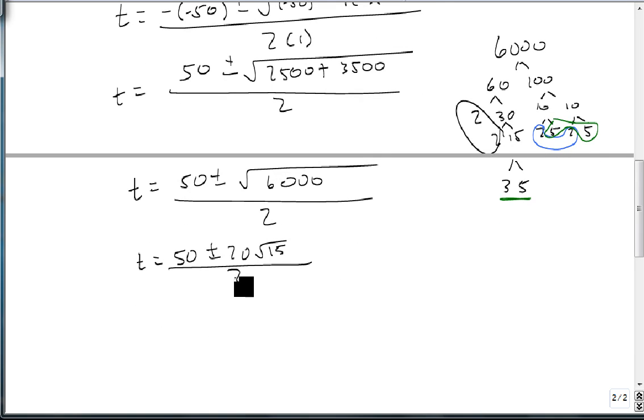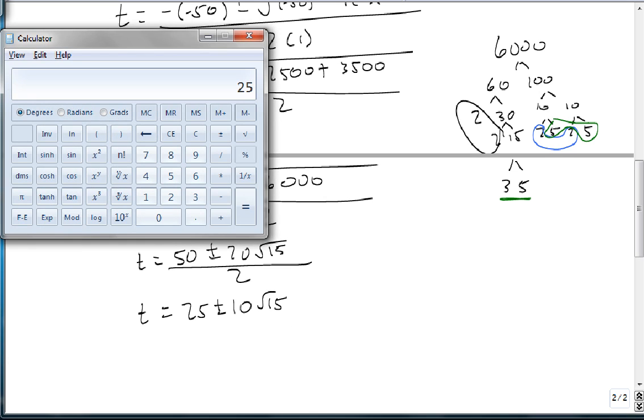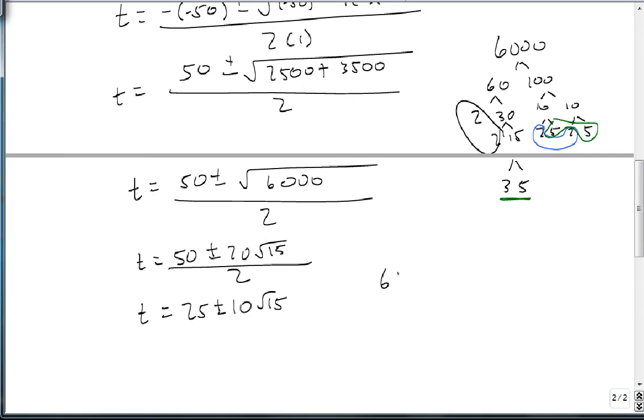Well, at this point we know that 2 divides into 50 and it divides into 20, so t equals 50 divided by 2 is 25, plus or minus 20 divided by 2 is 10, root 15. So in our calculator now, we do 25 plus 10 times the square root of 15, which is 63 or 64 minutes.